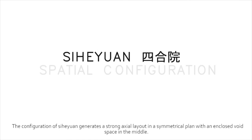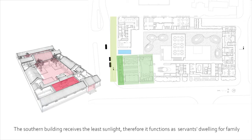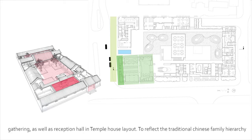The configuration of zi-he-yuan generates a strong axial layout in a symmetrical plan with an enclosed workspace in the middle. The southern building receives the least sunlight, and therefore functions as servants' dwelling for family gathering, as well as a reception hall in the Temple House layout.